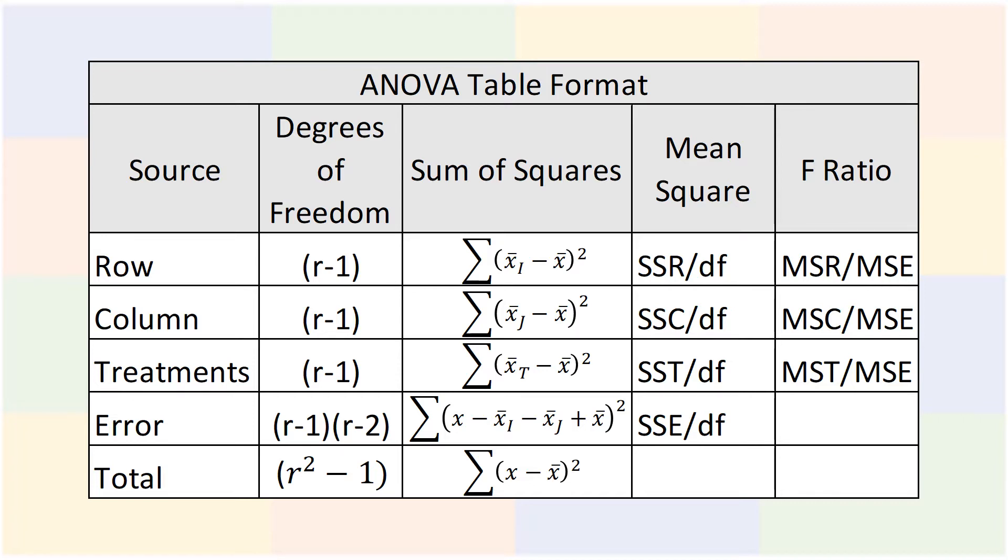The value of the f-ratio provides evidence confirming or rejecting the null hypothesis. If the null hypothesis is true, the row and column means and the total mean should all be close in value, which means the mean square value should be a fairly small number. Furthermore, if the null hypothesis is true, the mean square of the treatment and the mean square of the error should not be different. But if the null hypothesis is false, then the mean square for whichever nuisance factor is causing an effect will be greater than the mean square of the error.